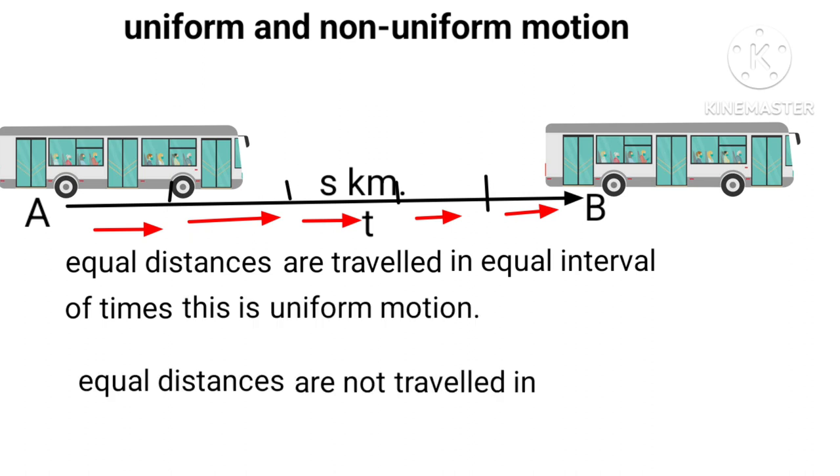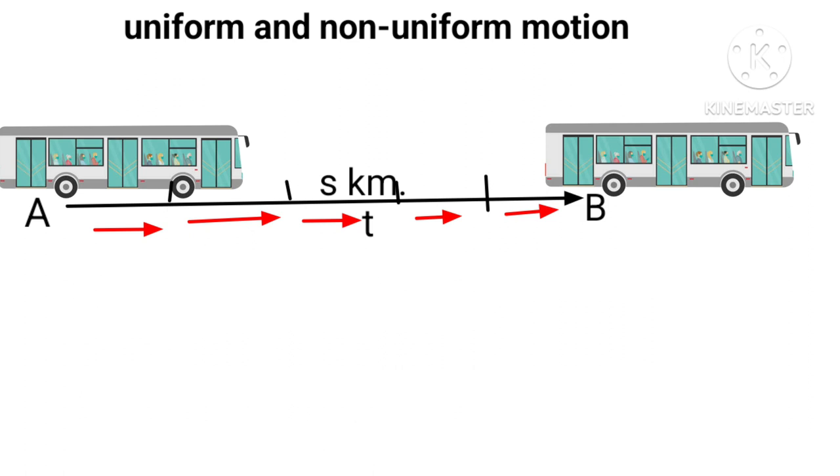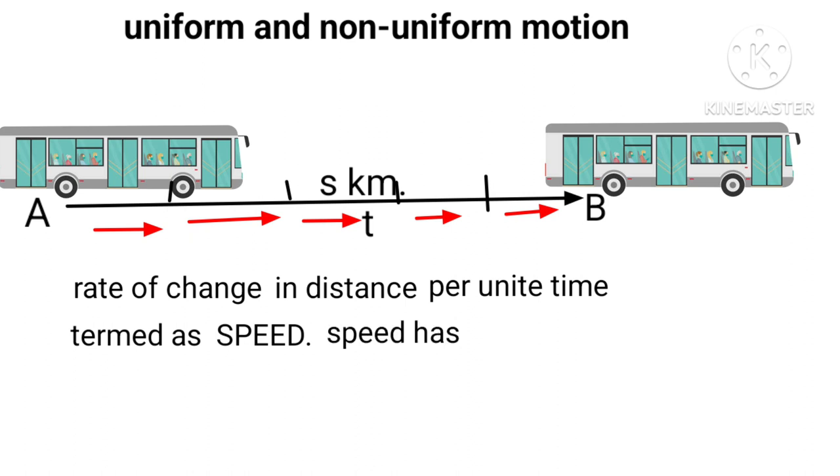If equal distances are not traveled in equal intervals of time, motion is then called non-uniform motion. Motion can be measured as rate of change in distance per unit time, termed as speed.